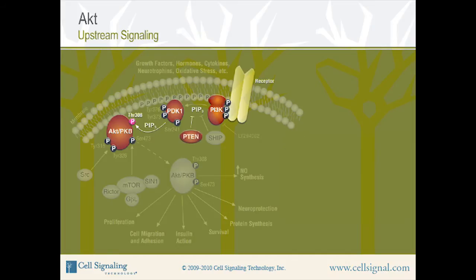PTEN is a phosphatase that converts PIP3 back to PIP2. Therefore, PTEN inactivates AKT and serves as an off switch for the signaling pathway. Loss of PTEN results in constitutive activation of AKT and is often seen in human cancers, an example of which will be shown later in this tutorial.